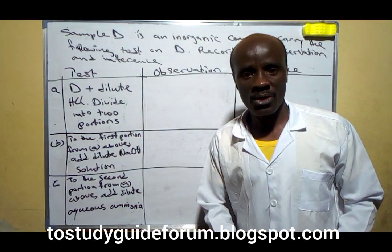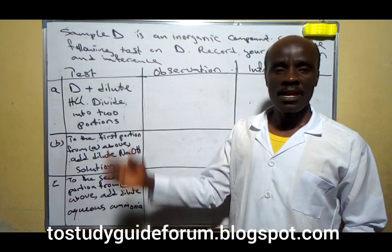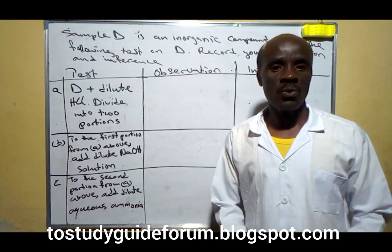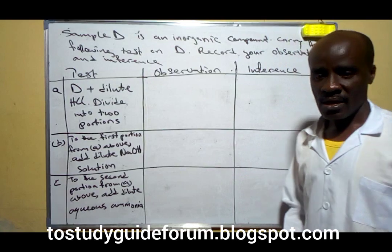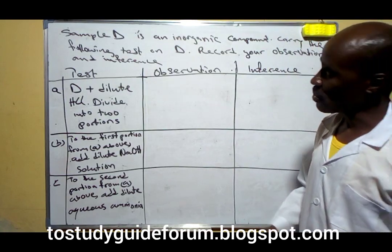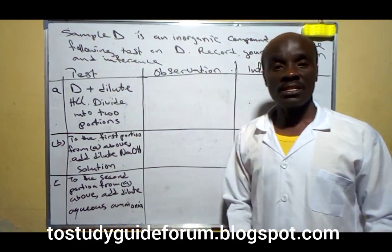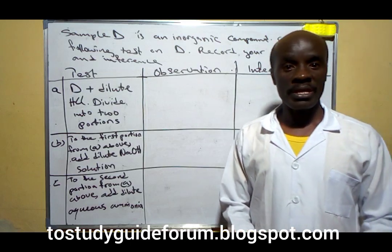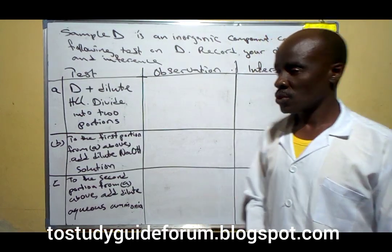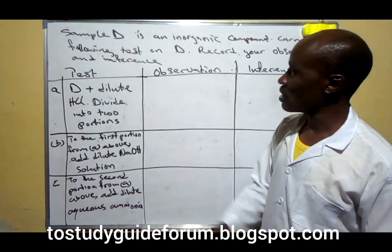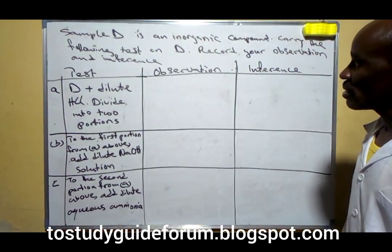Welcome to Study Guide Forum. Today we're going to learn how to analyze zinc oxide. Based on the equation we have here, sample D is a zinc oxide and we are going to be analyzing it. We have a basic test and the equation says this is a sample of a binding compound — carry out the fluid test on D and record the observation and difference.